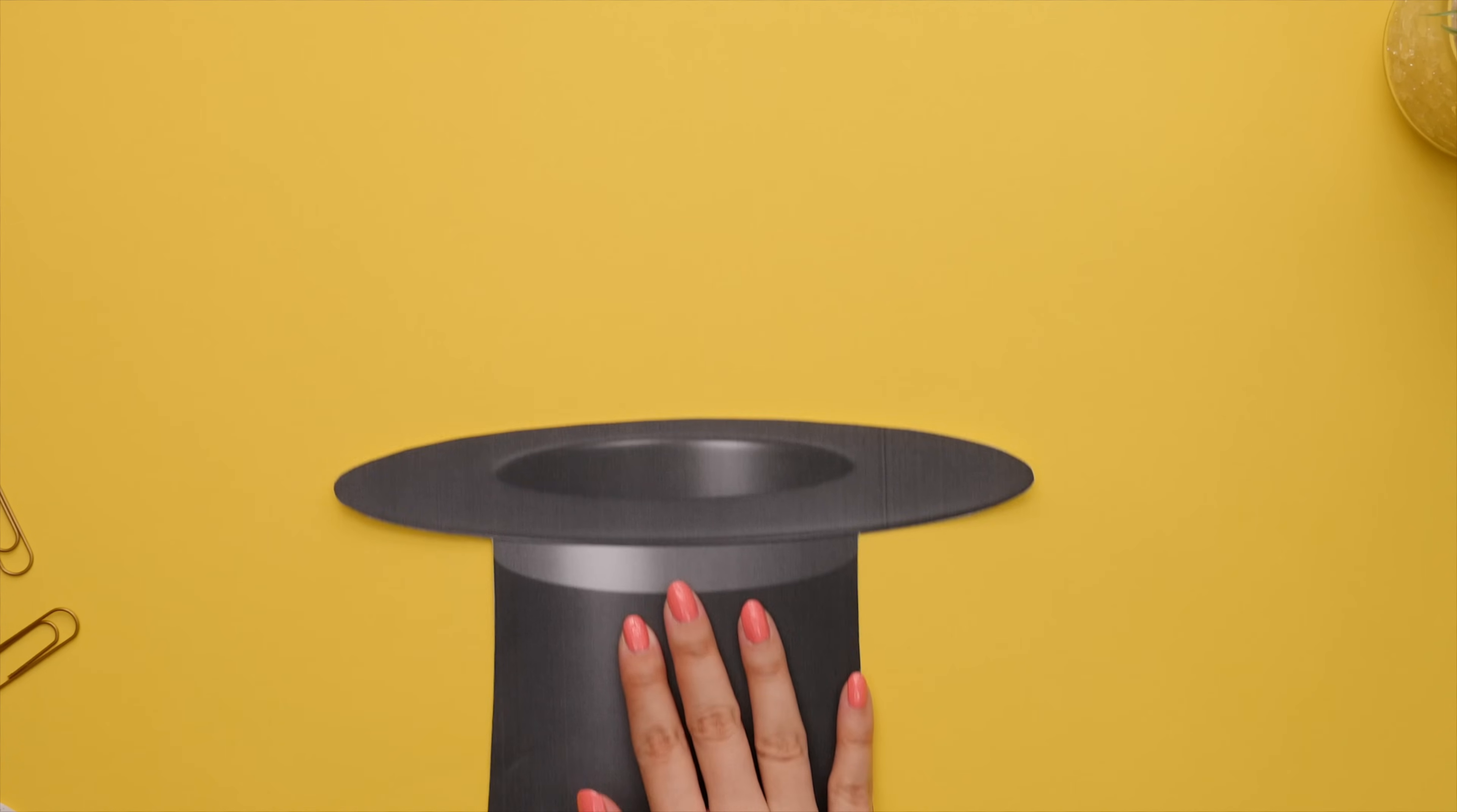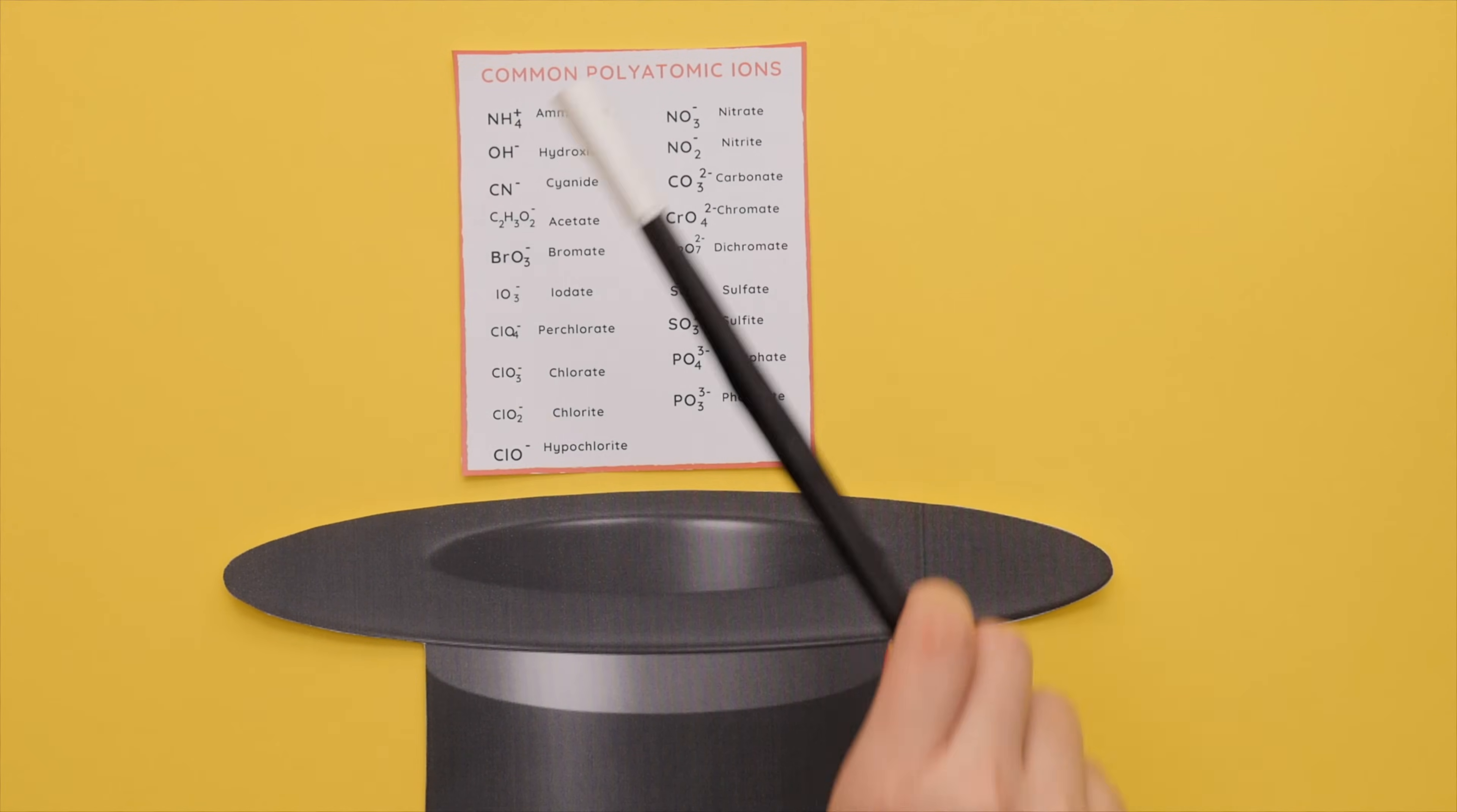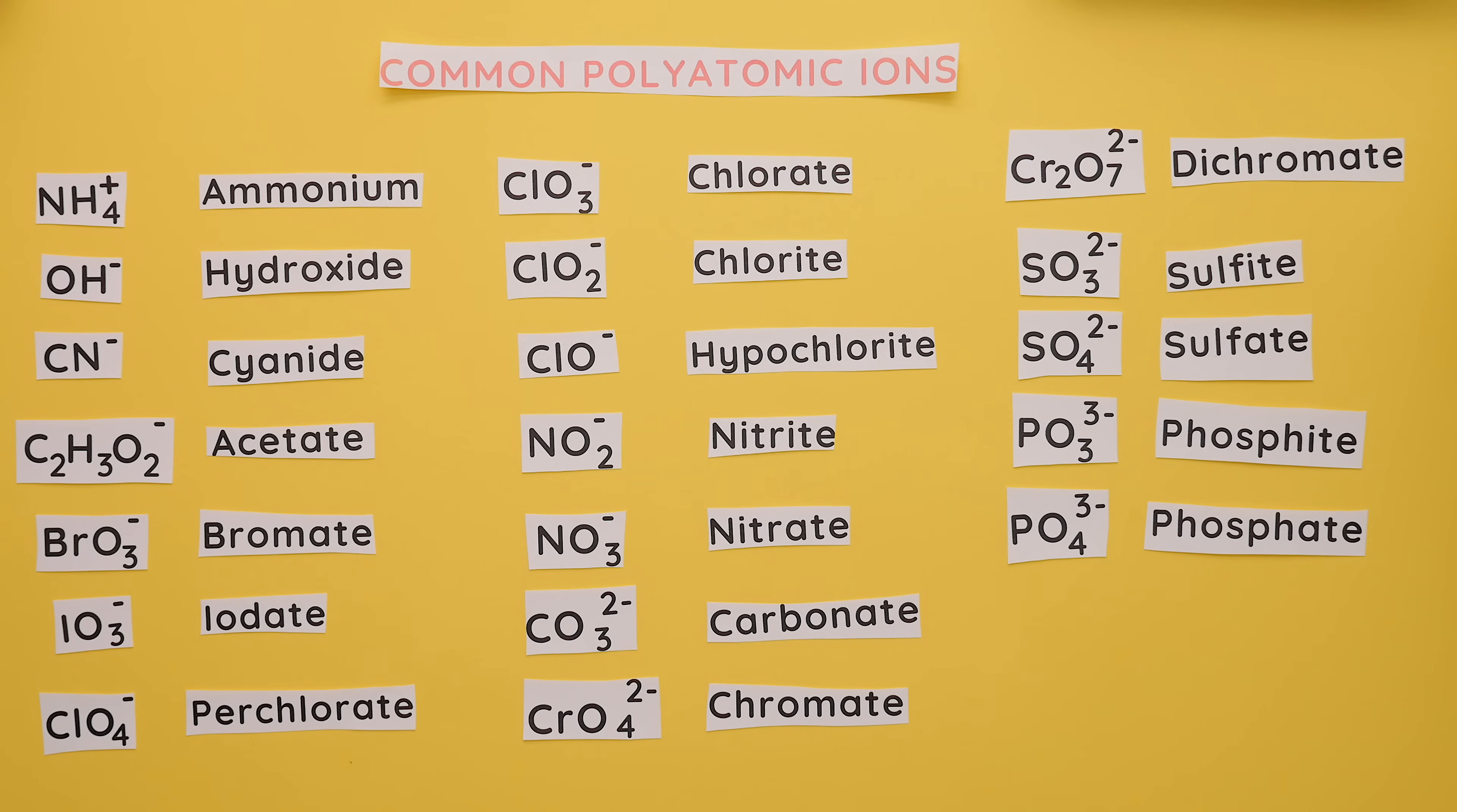Okay, here's the trick on how to remember all the polyatomic ions faster. Most polyatomic ions end in either -ite or -ate. Notice how the ones ending in -ate have one more oxygen than the ones ending in -ite. There's the trick!